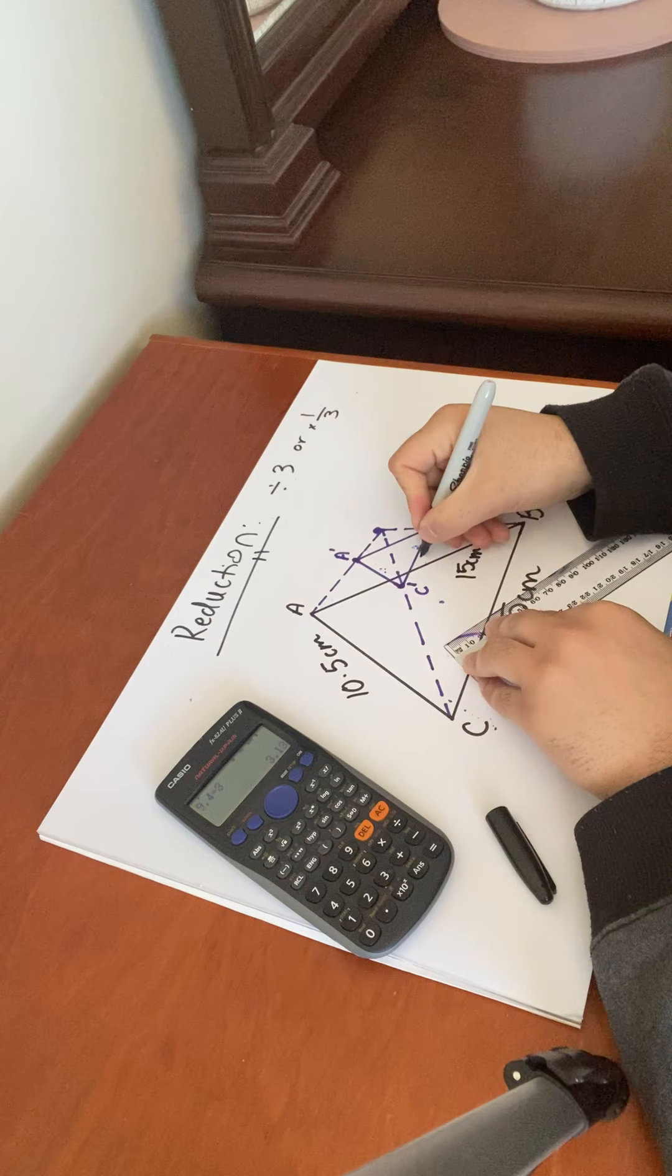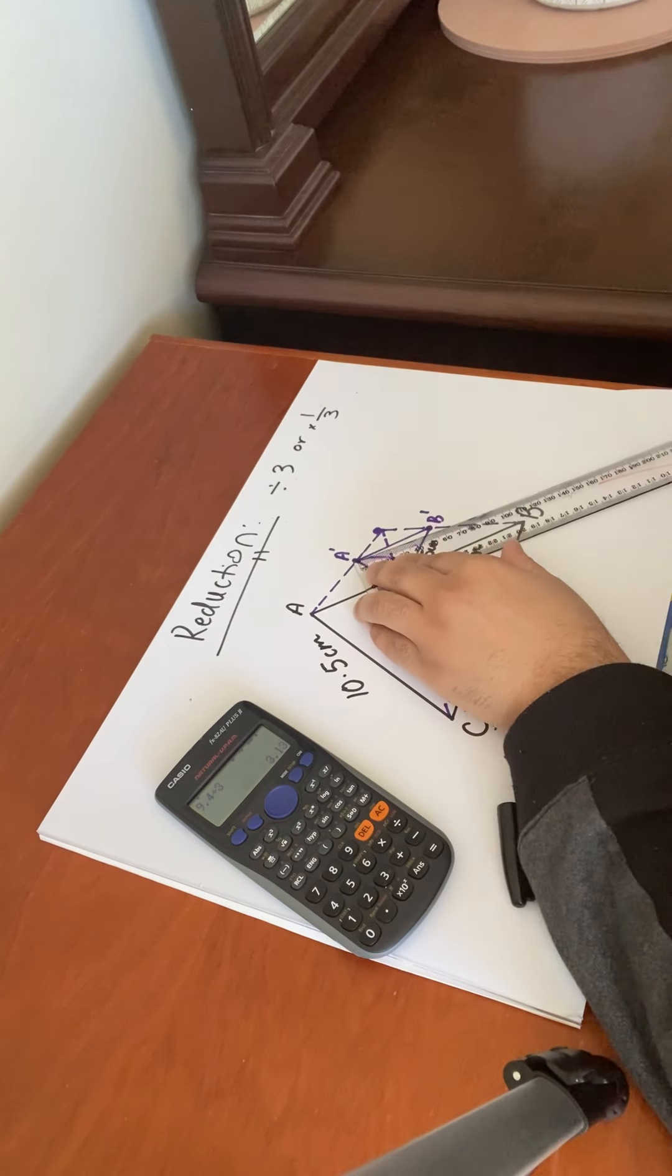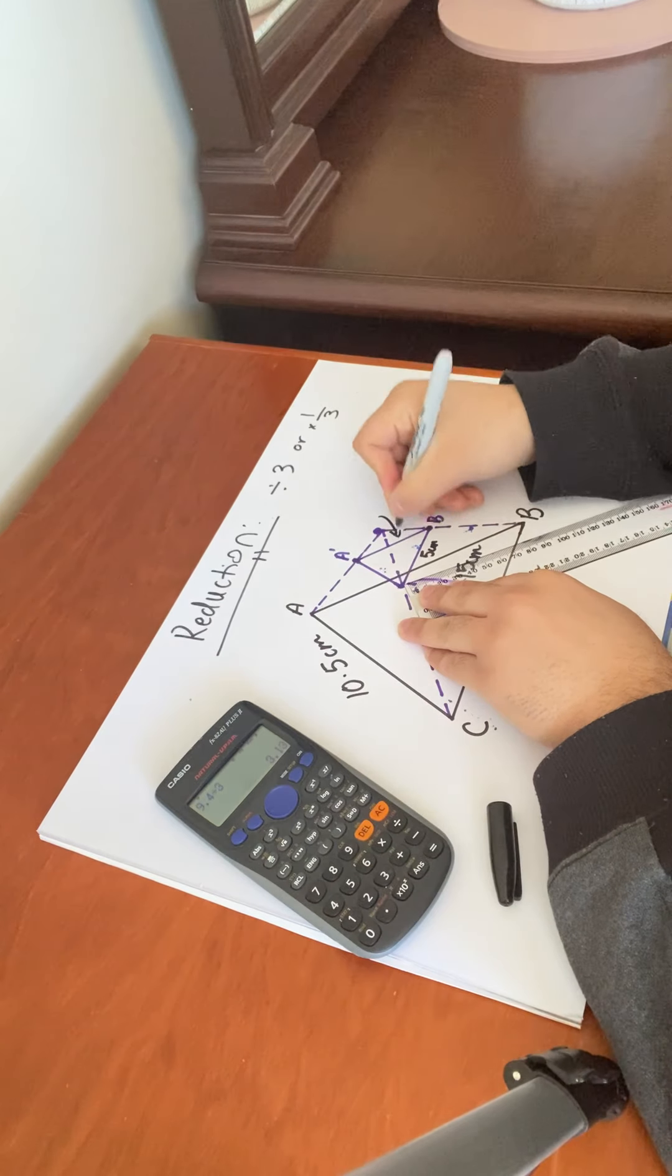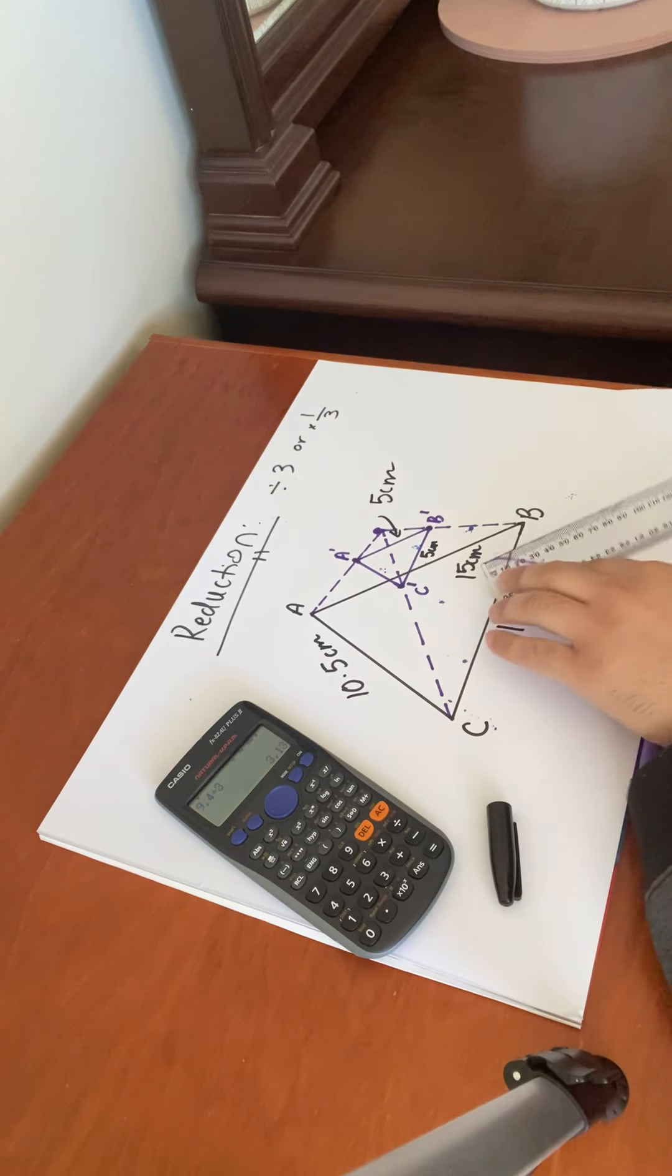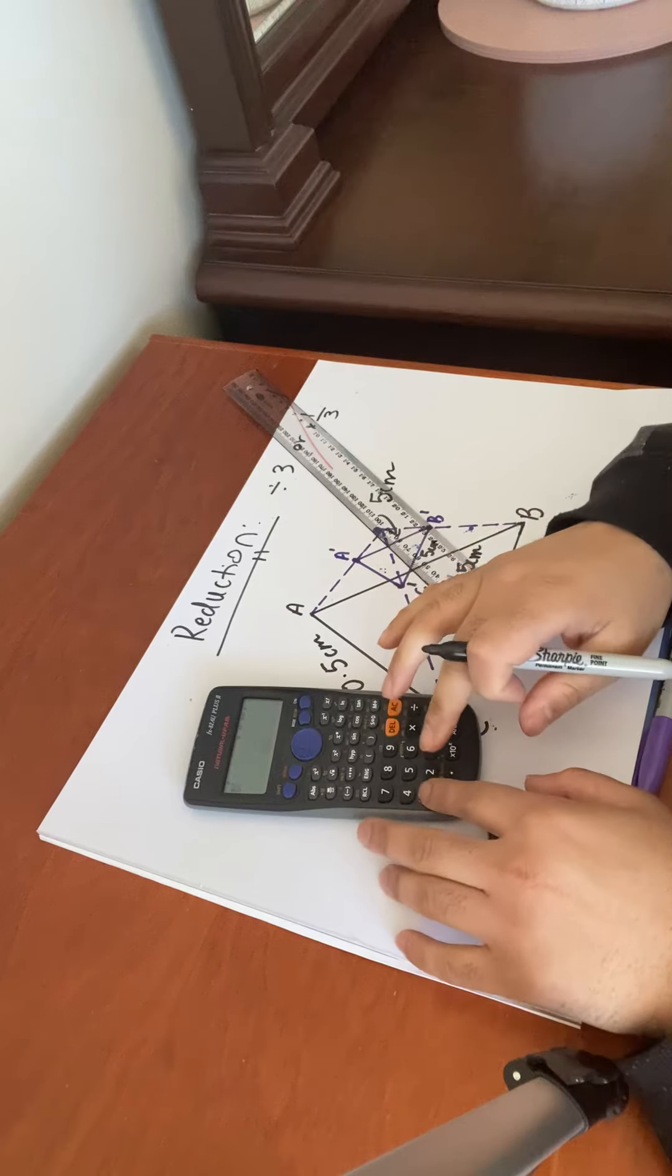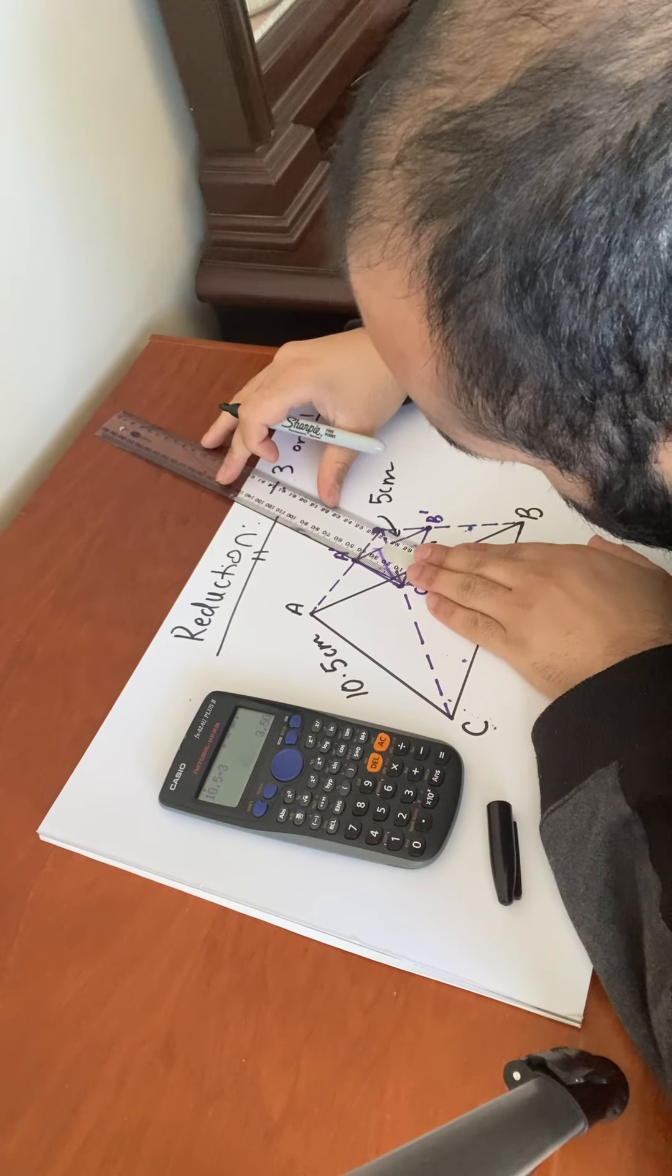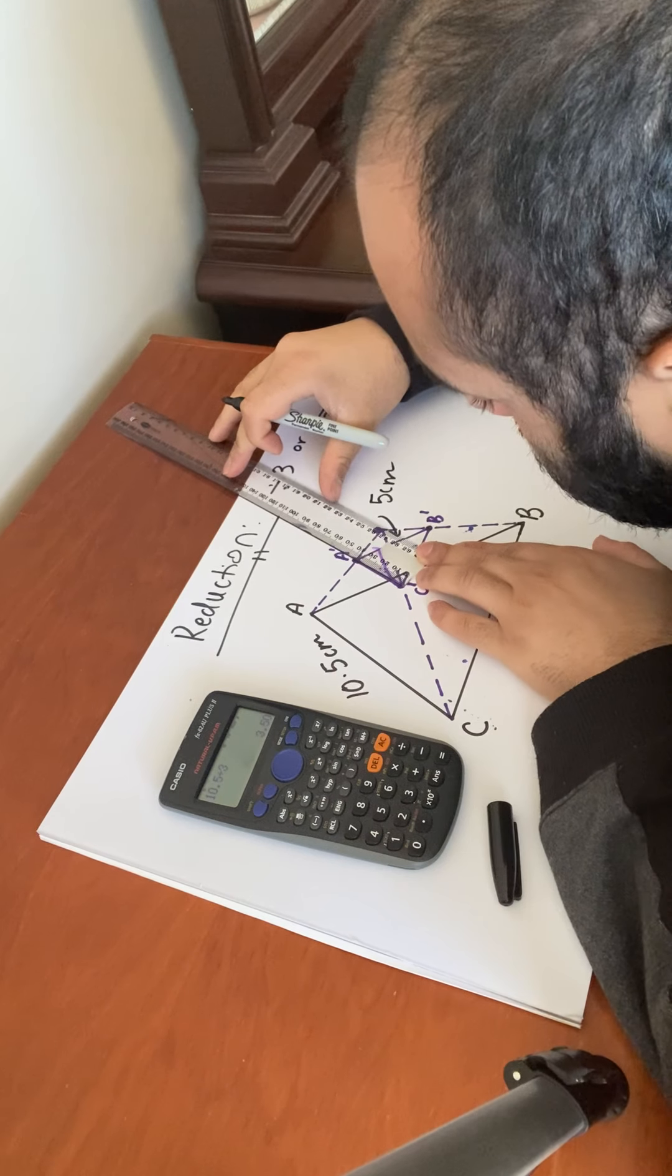Yep, that's five centimeters. This should give us five centimeters. Yes, it is five centimeters. This matching side, this matching side, 10.5 divided by three should give us 3.5. Let's see.